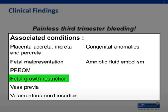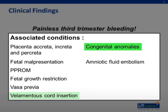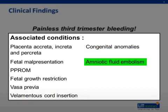Placenta previa is also associated with fetal growth restriction, vasa previa — which is vessels presenting at the cervical os — velamentous cord insertion, congenital anomalies, and amniotic fluid embolism.